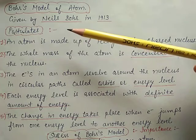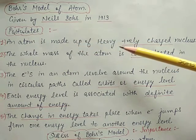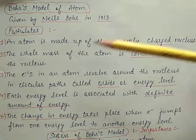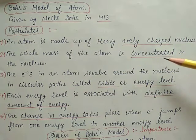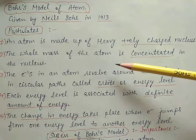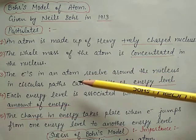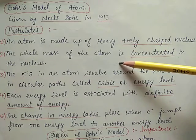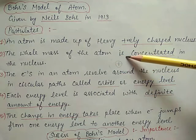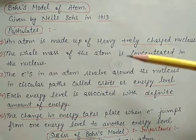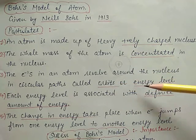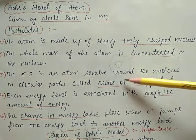What are the postulates of the Bohr model? Postulate number 1: an atom is made up of a heavily positive charged nucleus. The whole mass of an atom is concentrated in the nucleus. The electrons in an atom revolve around the nucleus in a circular path. This is called an orbit or energy level.